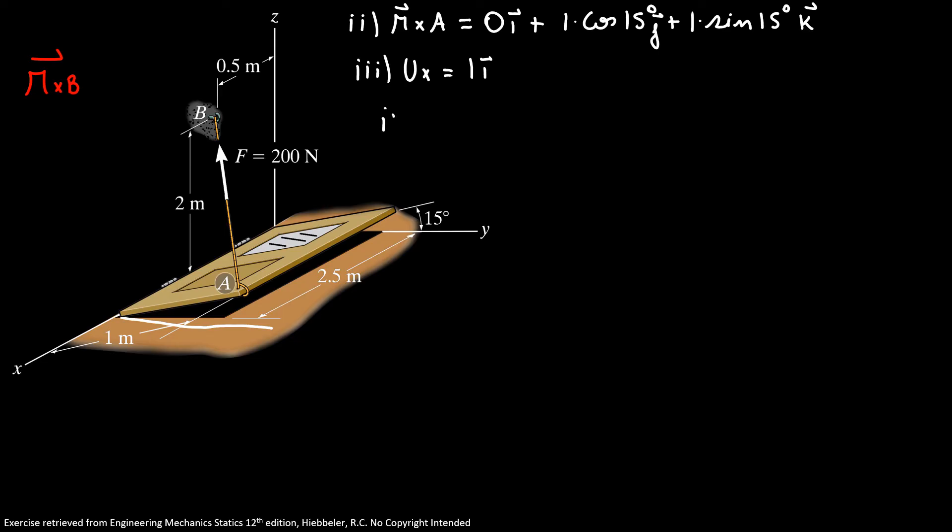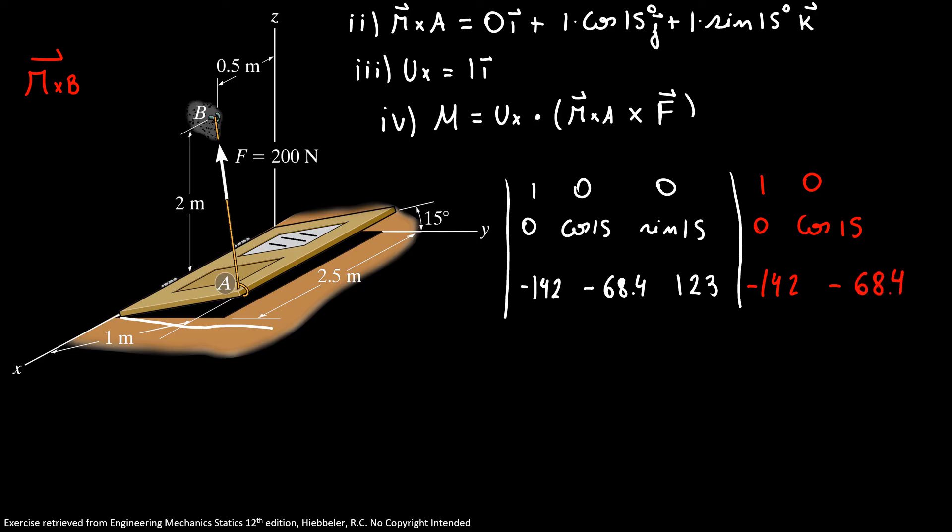So here our final step is to find the moment equal to UX times the cross product between my distance vector and my force. So our matrix is 1, 0, 0. My vector distance is 0, cosine of 15, sine of 15. And my force is minus 142, minus 68.4, and 123.